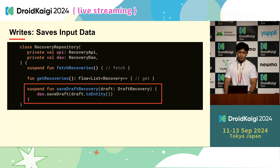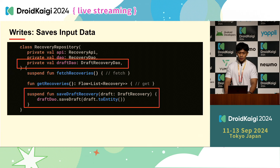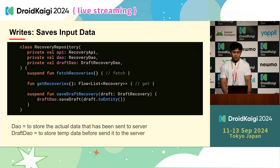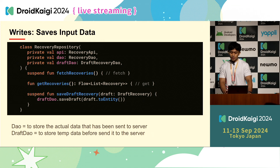Let's look at our recovery repository again. We just need to add one more function to write: save draft recovery, which saves data to our local database. We decided to make a separate DAO for drafts only — draft recovery DAO. The main DAO stores actual data that has been sent to or returned by the server, while the draft DAO stores temporary data before sending to the server. We made them separate because actual data will have an ID from the server, but our draft has an auto-generated ID from Room, so we kept them different to avoid conflicts.